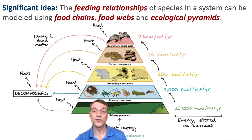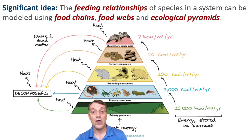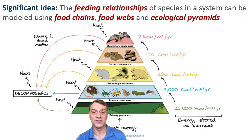As energy moves through trophic levels, significant amounts are lost as heat. Following the 10 percent rule, only about 10 percent of the energy available at one trophic level gets transferred to the next. The remaining 90 percent is lost through metabolic processes, movement, and heat production through respiration. This inefficiency limits most food chains to typically four or five trophic levels.